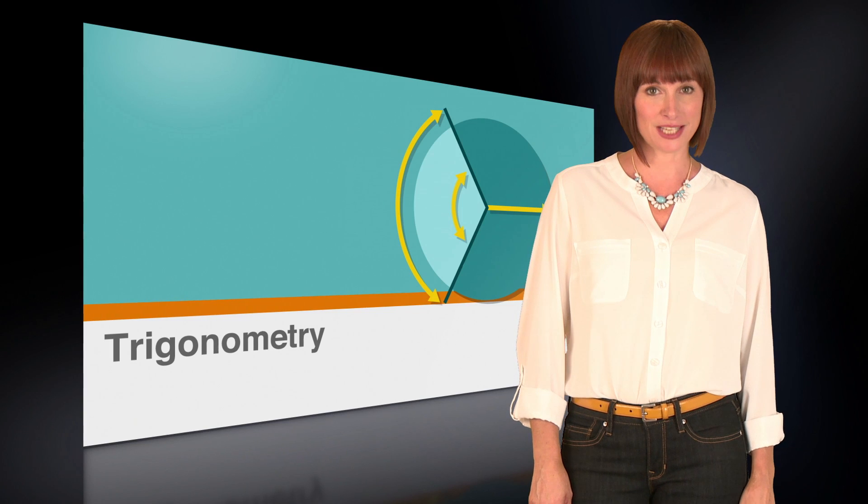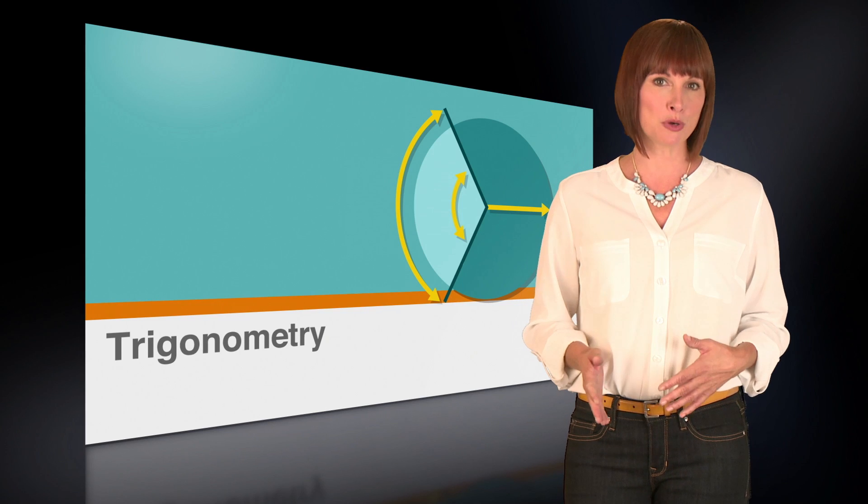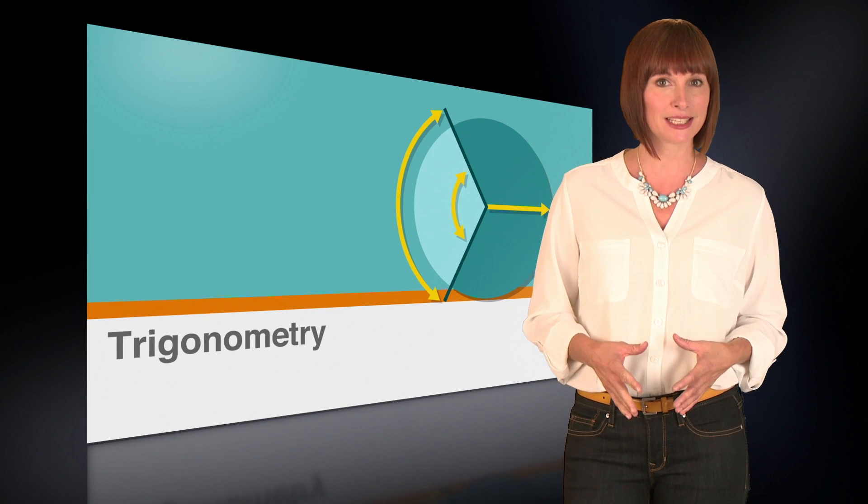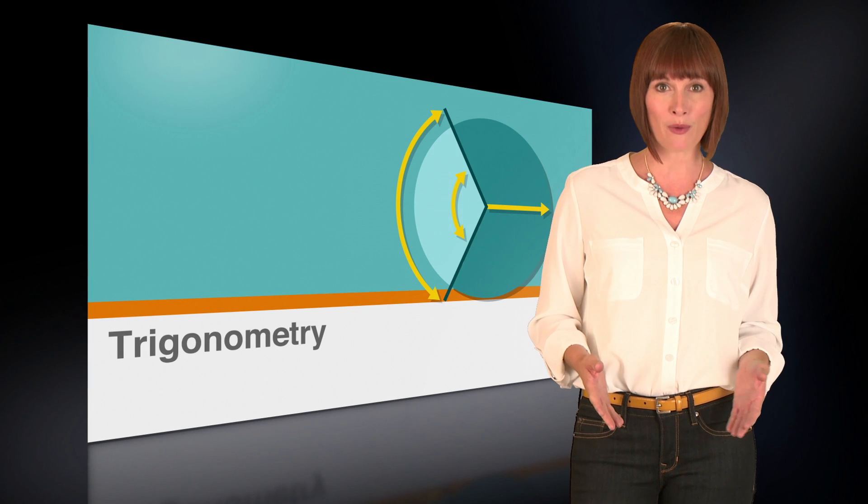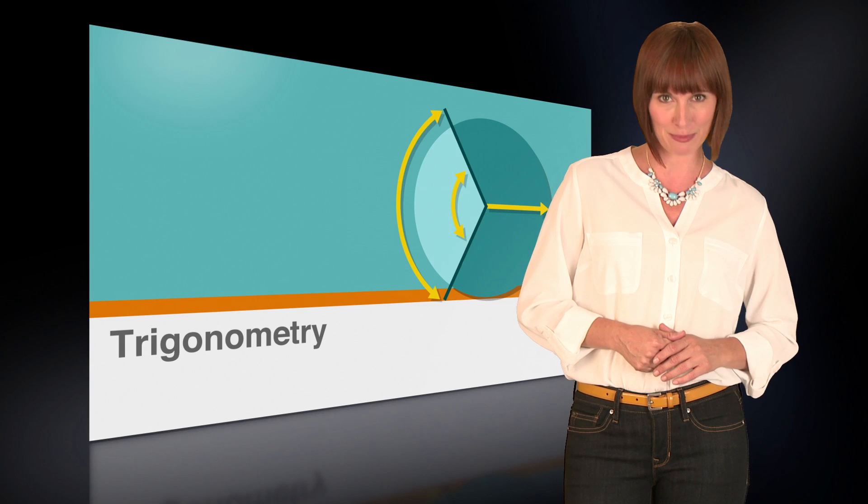These types of sine, cosine, and tangent problems are pretty straightforward on the ACT. They may move the triangles around to try to disorient you, but if you circle the angle in question, remember your SOH-CAH-TOA, and check to make sure you're working with a right triangle, you should be able to outsmart them.